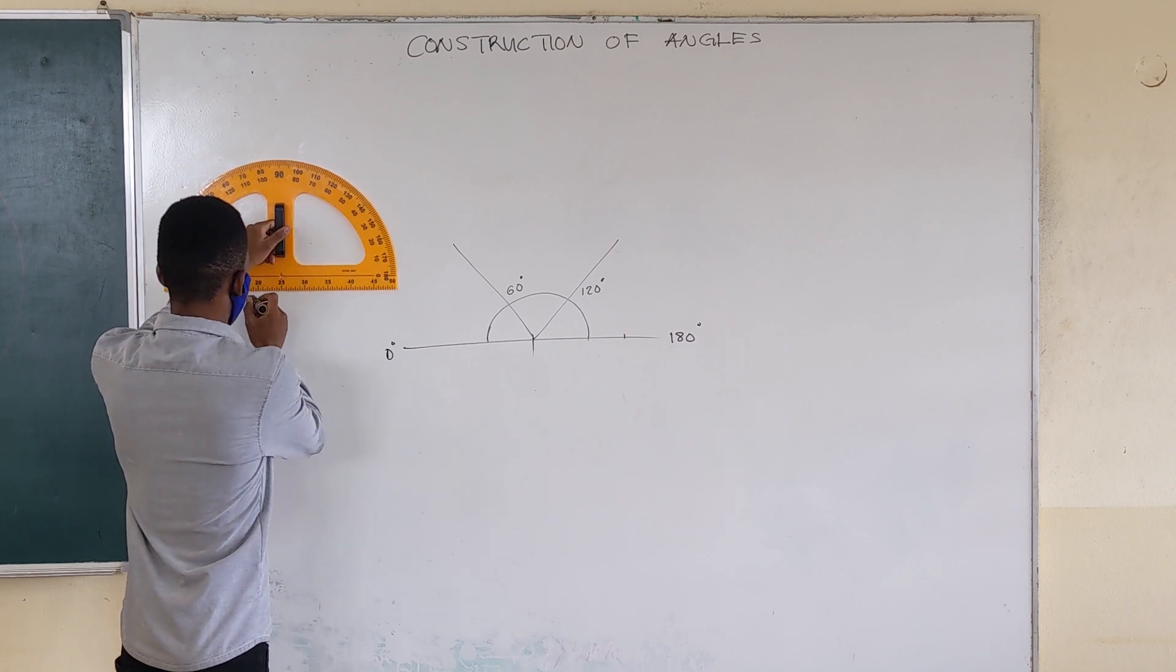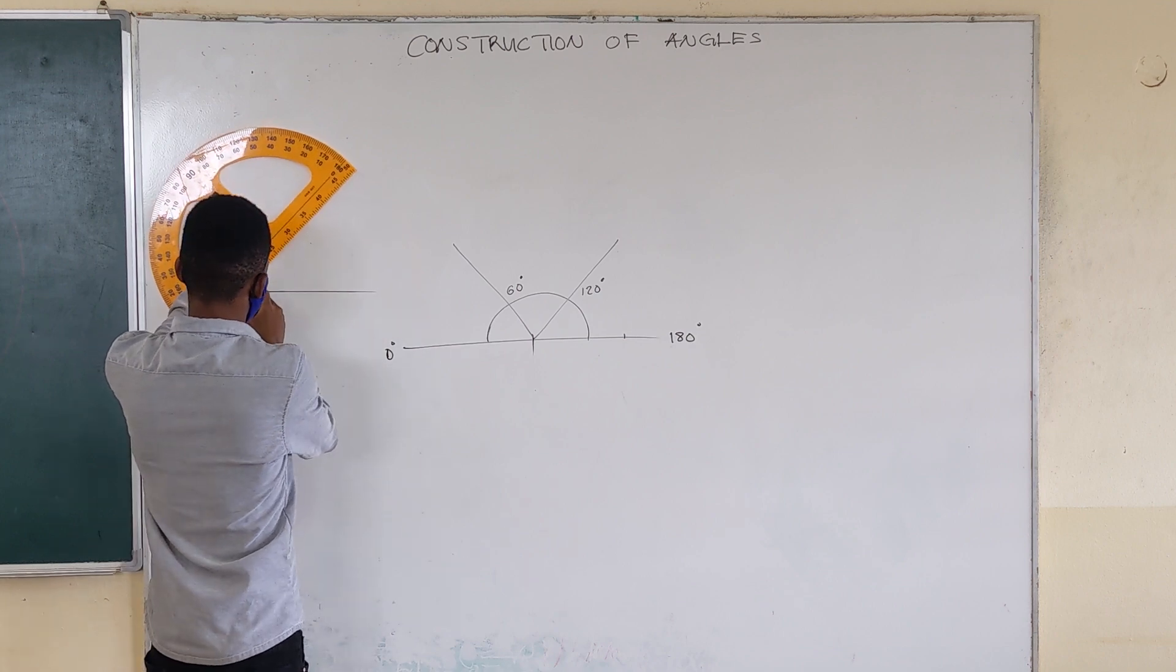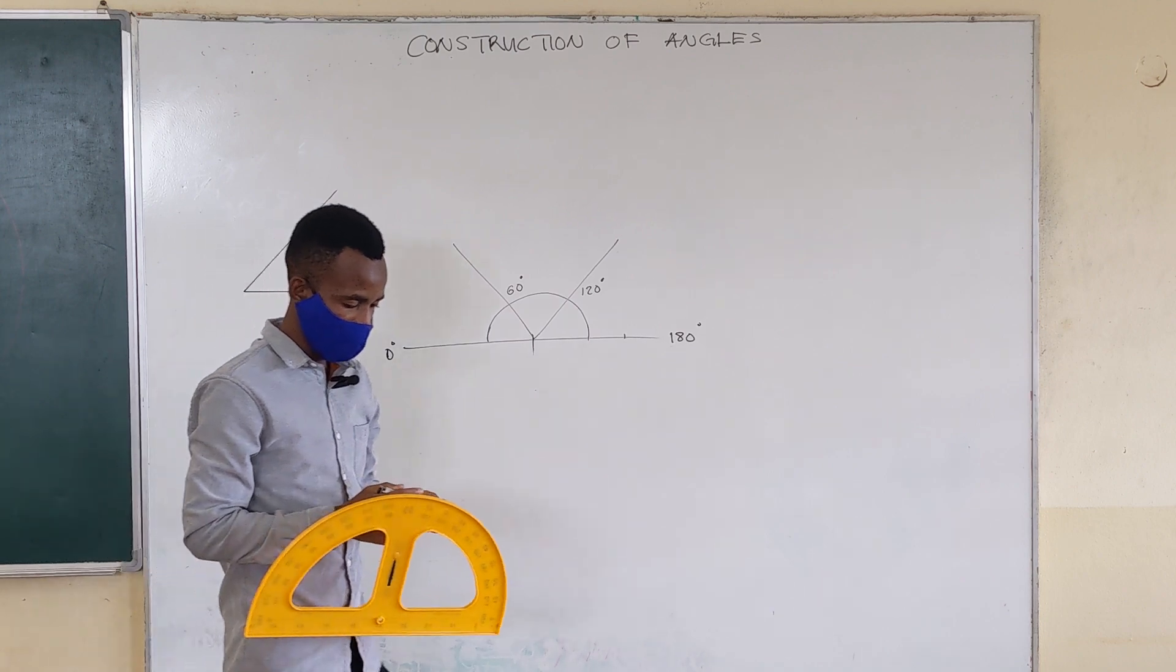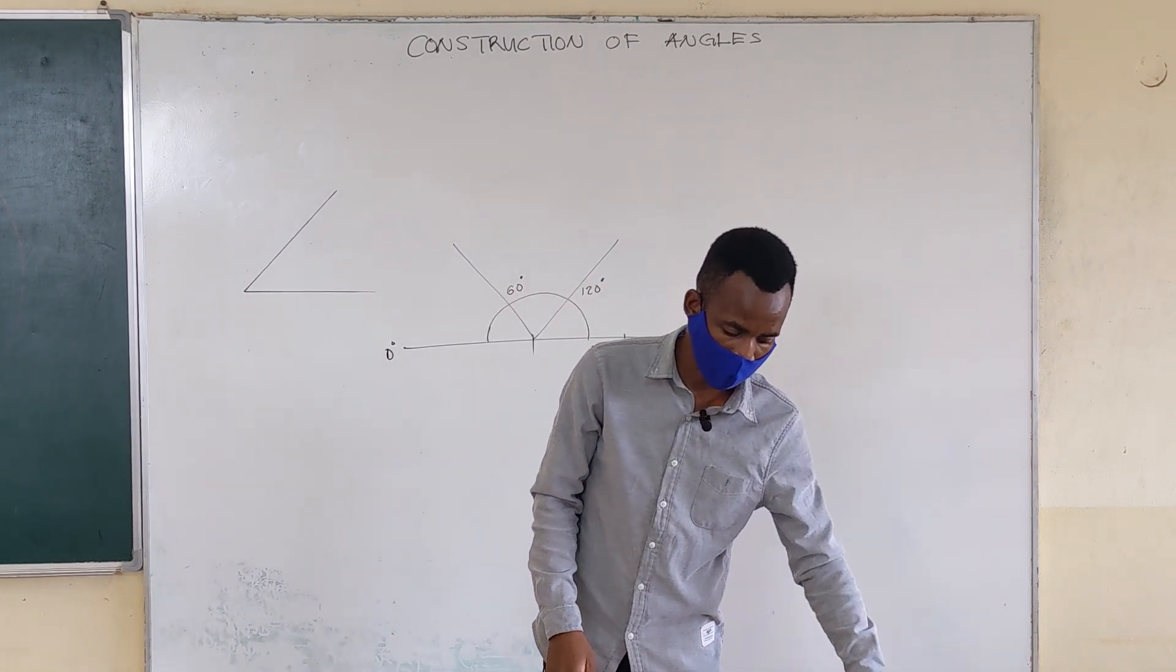Say you have two lines meeting at a point like that. You want to find them, you want to draw.